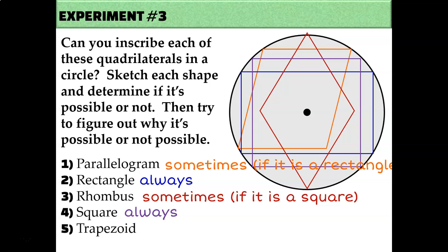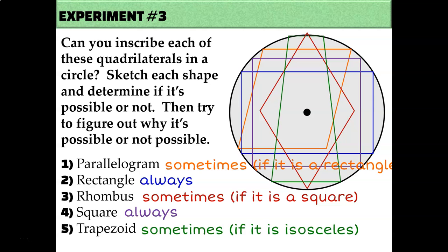What about trapezoids — can you make all trapezoids work, or just some of them? The only trapezoids where all four vertices fit on the circle are isosceles trapezoids; a general trapezoid can't be inscribed. So what's the common theme? Why are some of these always possible and some only sometimes? Come up with a rule for what guarantees a quadrilateral can be inscribed. You might think rectangles and squares require right angles — but that's not necessarily the rule, since isosceles trapezoids are inscribable and don't have right angles.